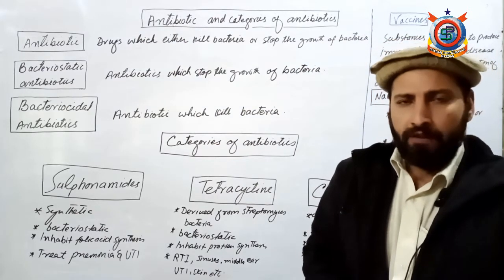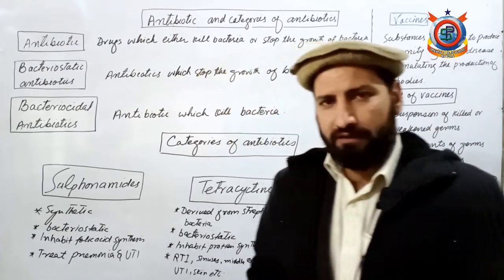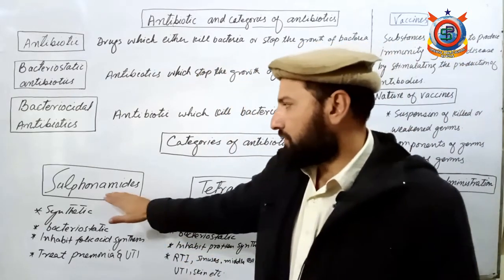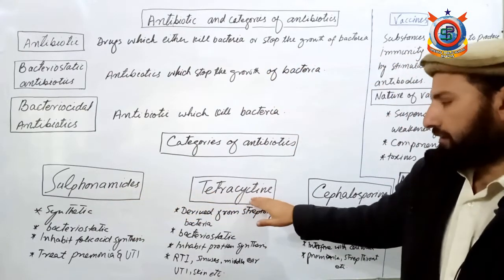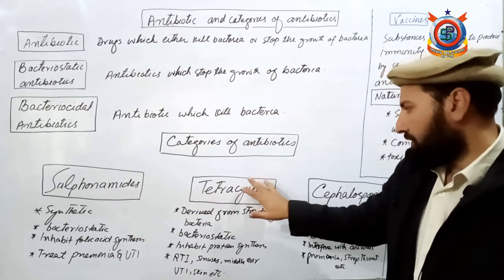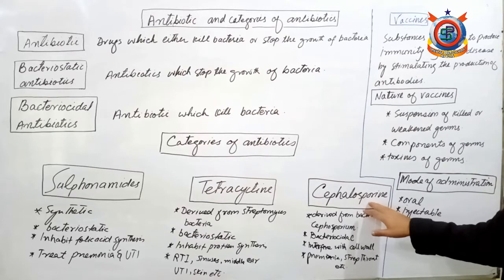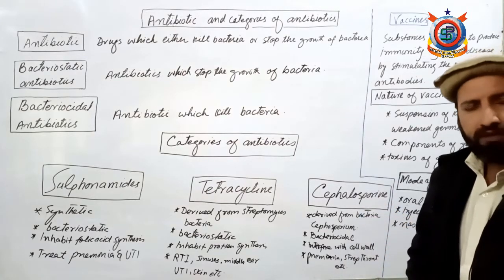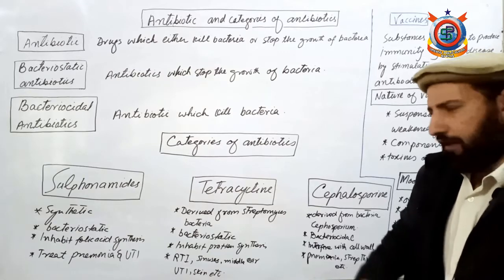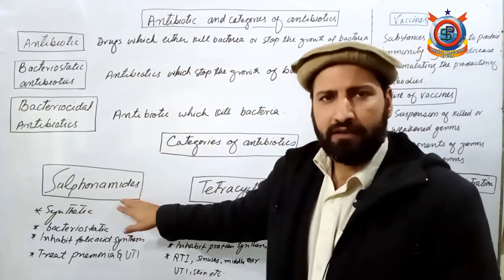Antibiotic کے broadly تین categories ہیں۔ پہلی category کو کہا جاتا ہے sulfonamides، دوسری category ہے tetracycline، اور تیسری category ہے cephalosporines۔ اب یہ تین categories آپ نے سیکھنی ہیں کہ یہ antibiotic کیا کام کرتے ہیں اور ان کا nature کیا ہے۔